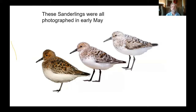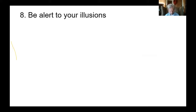Here's an example with birds molting at different rates. These are sanderlings — all adult sanderlings photographed in early May. The one on the left is all the way into full breeding plumage, which they don't wear for very long. The other two are not nearly as far along, so they look much paler. We can expect to see that kind of variation within flocks of almost any kind of bird.